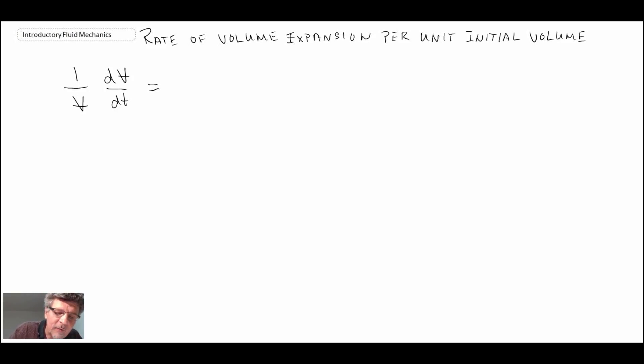In fluid mechanics, we can express this with an operator, del dot. Del dot is the divergence, and it is the divergence of the velocity field. Sometimes you'll hear it referred to as being del dot.